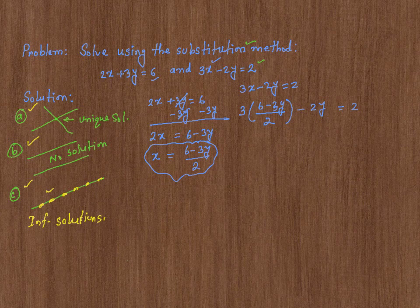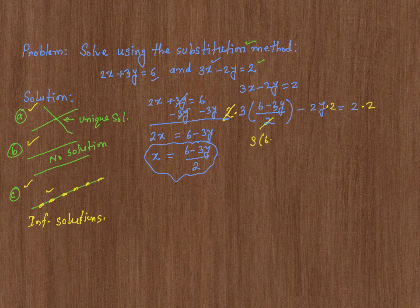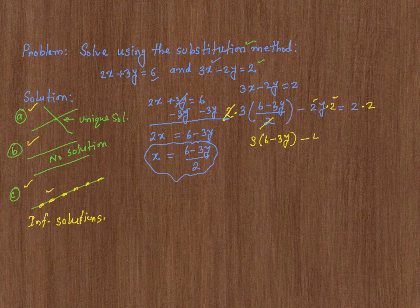Now, to get rid of the fraction, I'm going to multiply everything by 2. Multiply this by 2, this by 2, and this by 2. Then this will cancel out, I will be left with 3 times 6 minus 3y, then minus 2 times 2 is 4, and y is equal to 4.